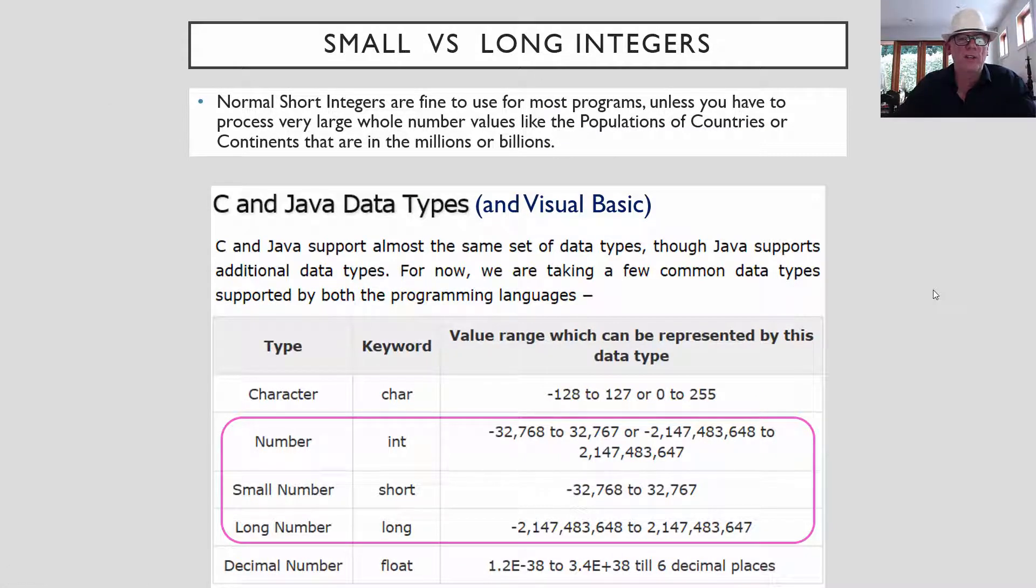So let's look at integers, small versus long integers. Now, most times, we can just use the normal integer, the short one, because you've got a range there of negative 32,000 up to positive 32,000. And for most of our programs, that's going to be the range of whole numbers we use. But if you were doing things that are science, which were like the populations of countries, which are in millions or billions, you're going to have to go bigger than 32,000. So for that, you might use the long integer format, because it has a much bigger range, as you can see down here in this table.